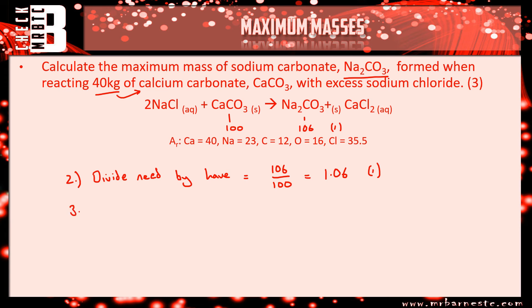And then finally, all you need to do is multiply the mass by that number. So 40 times by 1.06 is 42.4. Don't forget to put your units in. We started in kilograms, so we finish in kilograms, and that's going to get your third mark. And again, if you put 42.4, if you've worked it out, you would get all three marks.